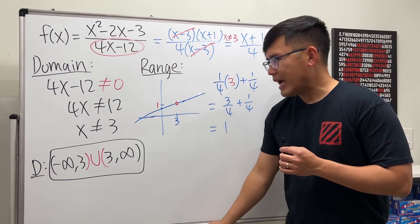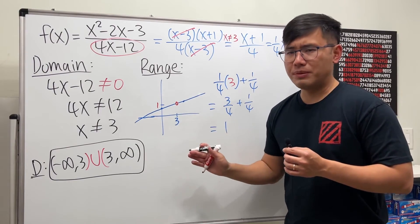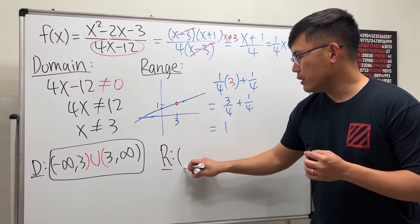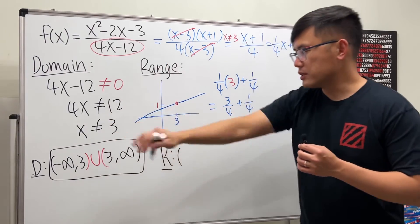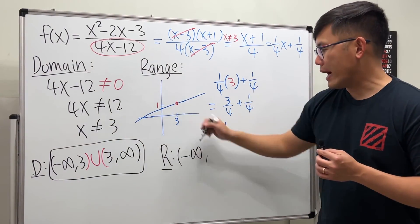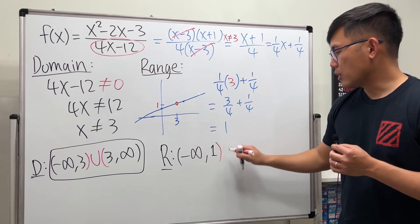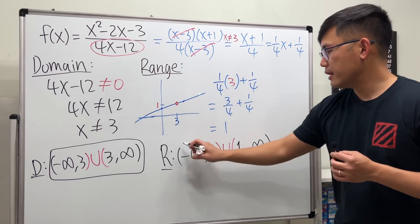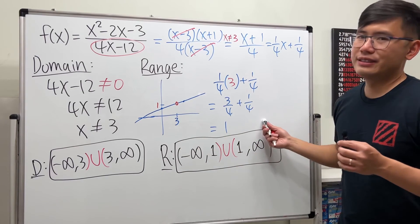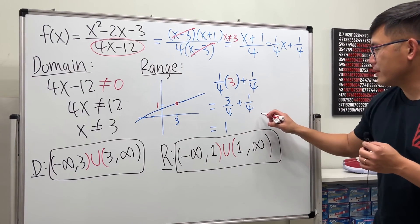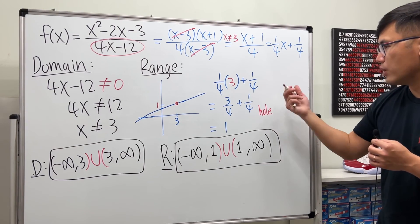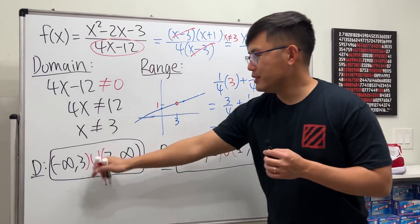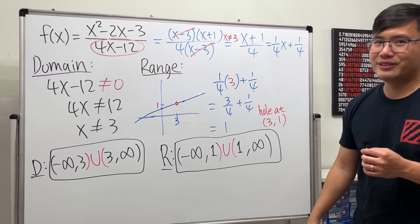With the picture, finding the range is much easier. The line goes from negative infinity all the way up to 1, but 1 is missing, then continues from 1 to infinity. So the range is negative infinity to 1, open, union 1 to infinity, open. There is a hole at the point (3, 1) — that's why 3 is not in the domain and 1 is not in the range.